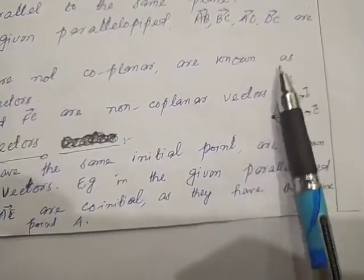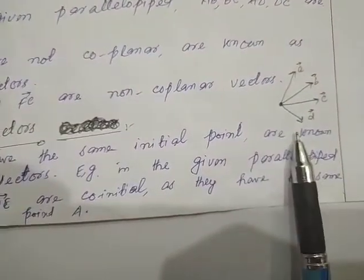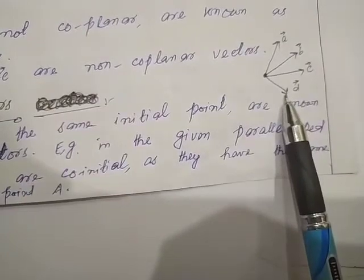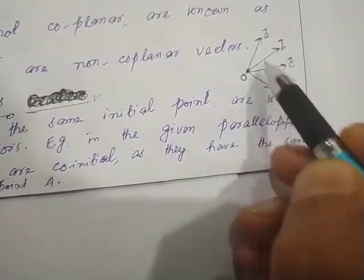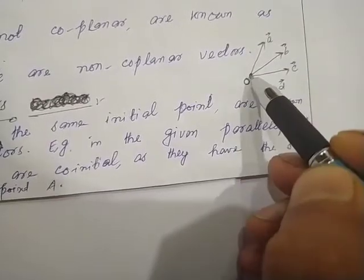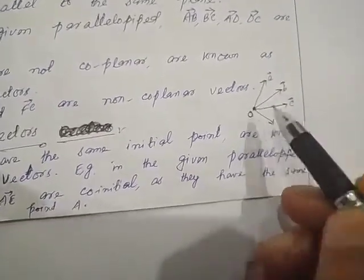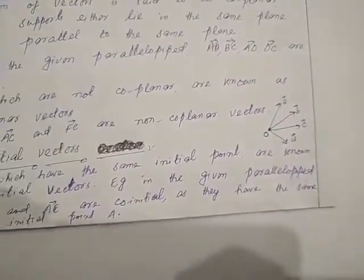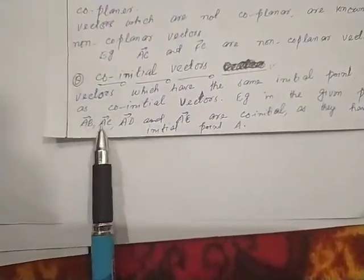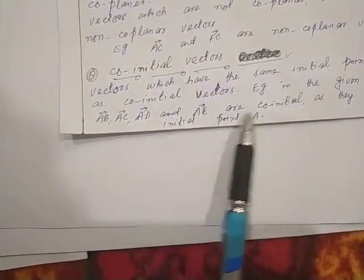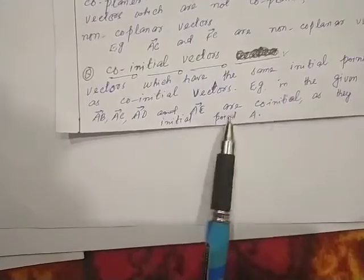For example, in the given parallelepiped, we will see all vectors — AB, AC, AD, and AE. All these vectors have the same initial point A. Since all four vectors originate from the same initial point A, that is why all these four vectors are termed as co-initial vectors.